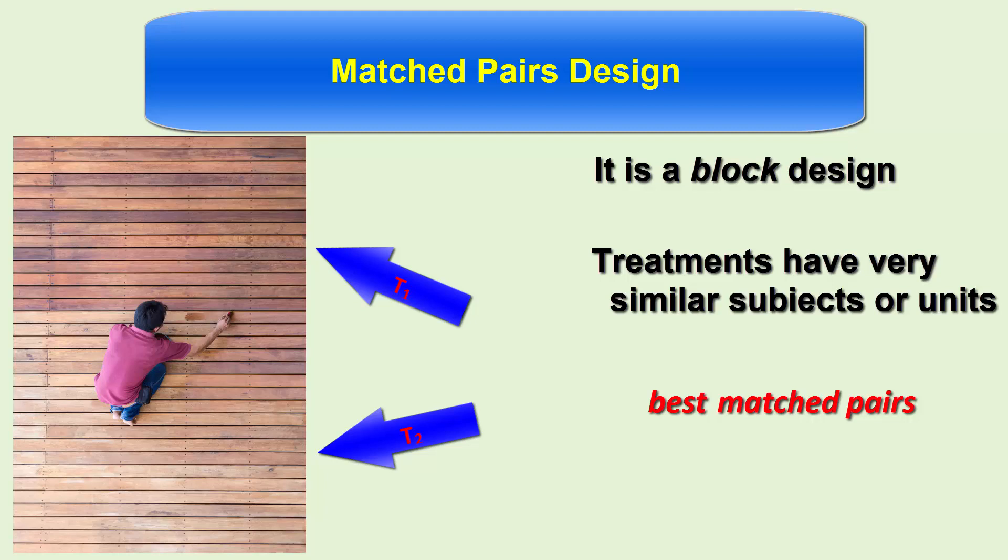We can examine the stains initially and then monitor them over time comparing the results. In this way, both units, the same deck, go through the exact same weather patterns simultaneously. This eliminates or reduces many potential lurking variables.